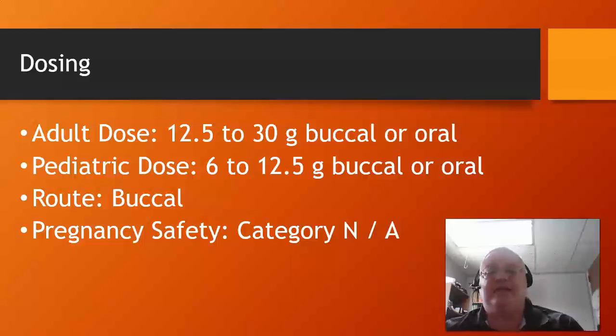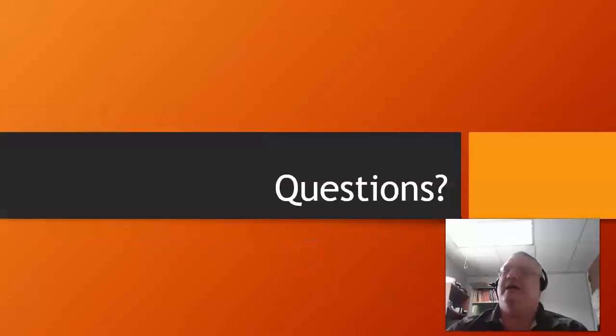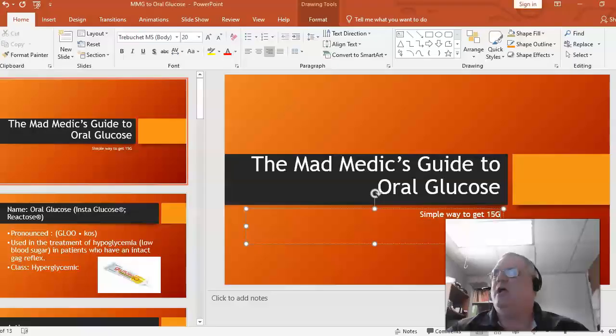The route is buccal or oral — they're going to swallow it, or it's going to absorb through the cheek area. The oral glucose will absorb through those membranes. Only in the mouth, though — we don't put it in any other type of membrane because it could cause problems. That's going to do it for oral glucose, and I'll see you guys on the next one.